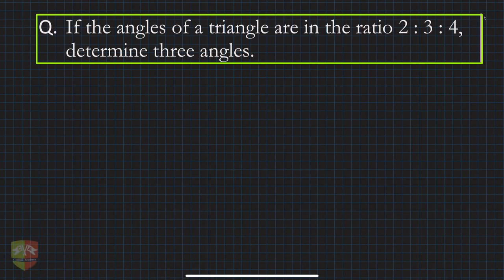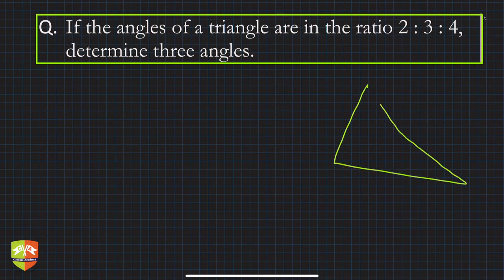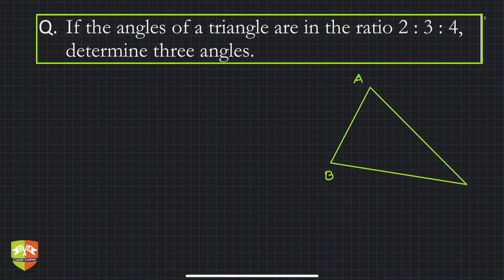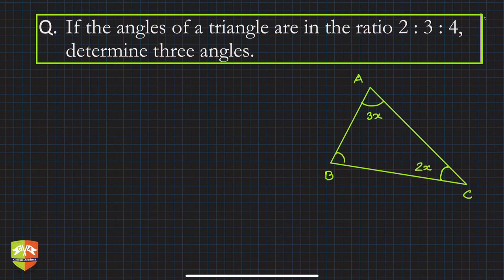In this question, the angles of a triangle are in the ratio 2:3:4. We have to determine the three angles. Let's say ABC is a triangle. The smallest angle is 2x, the next is 3x, and the largest is 4x, so they are in the ratio 2:3:4.